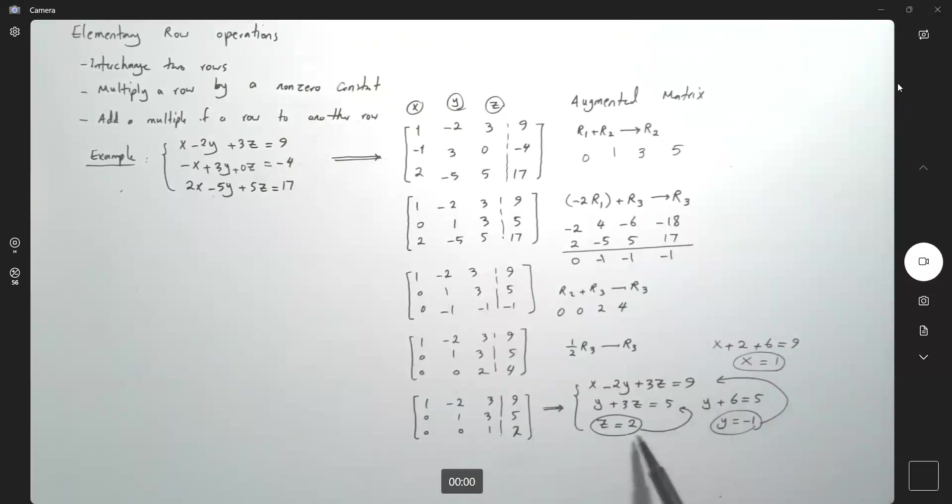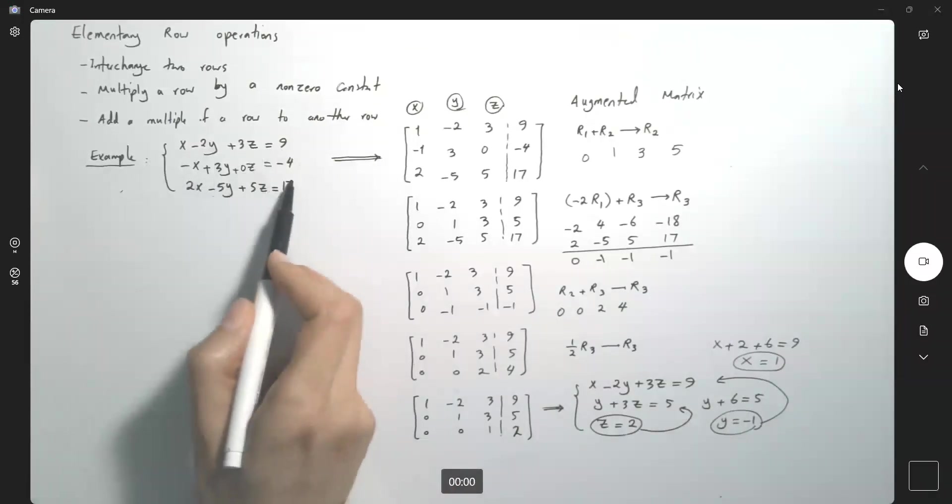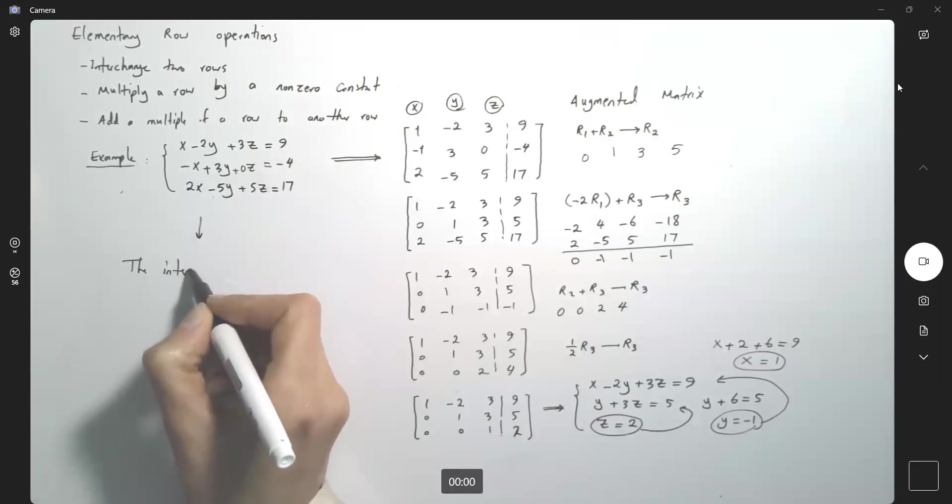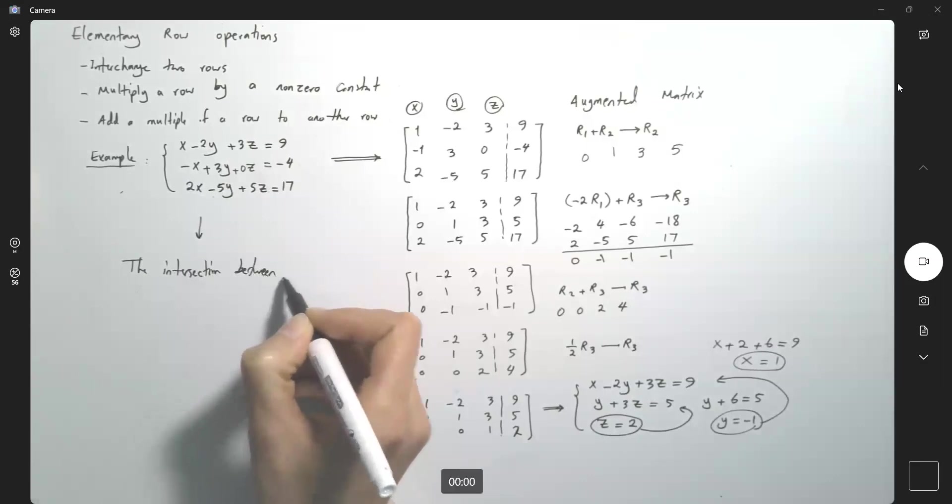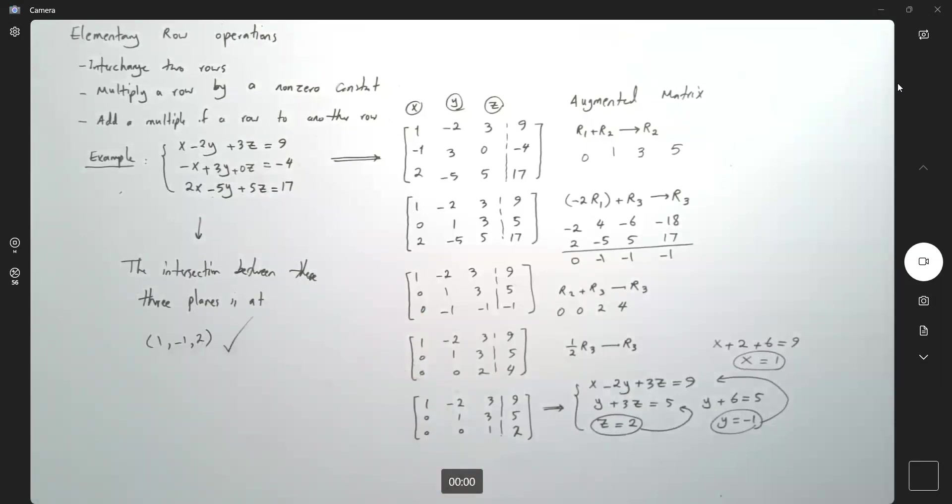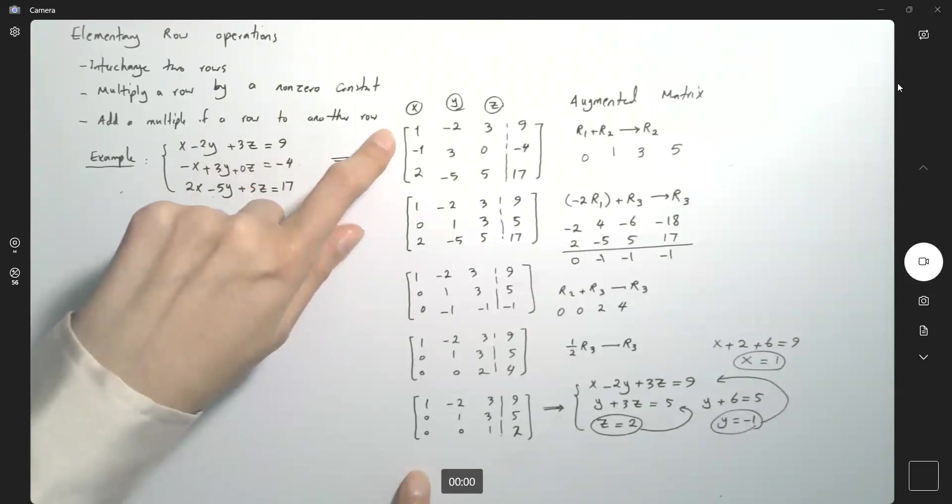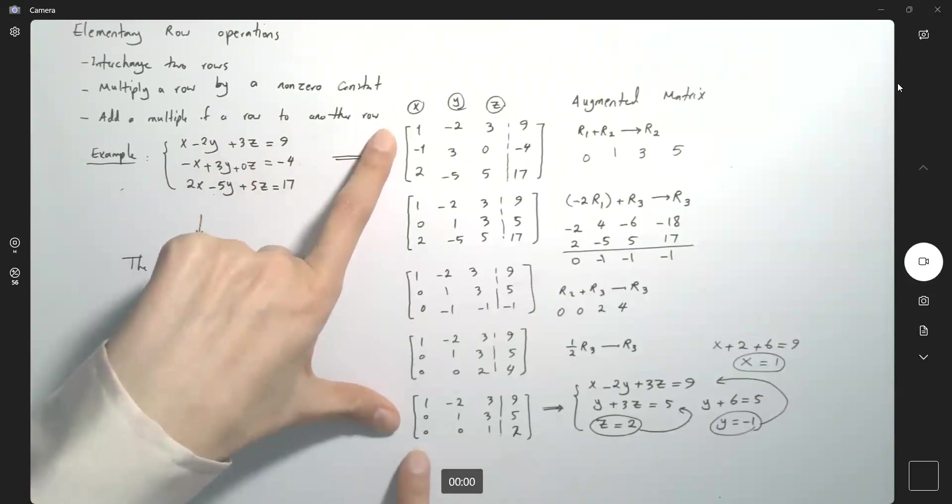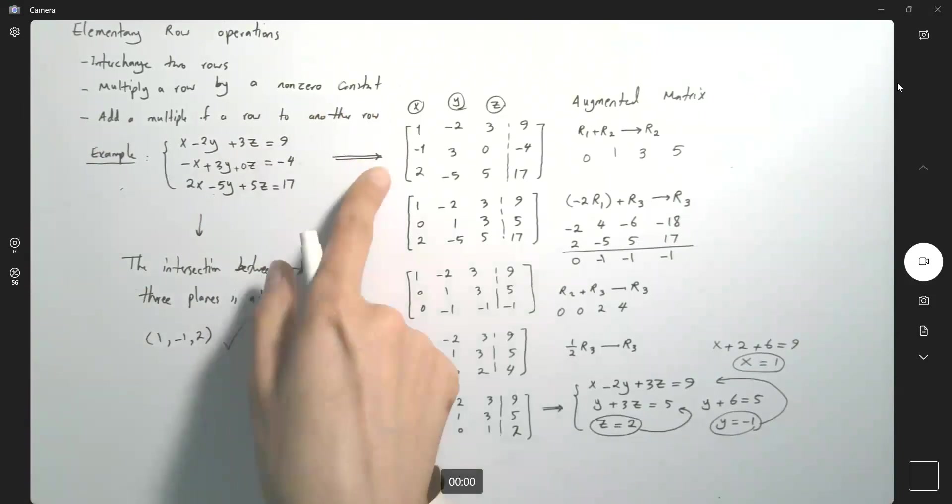And x becomes 1. So the solution of the system is 1, negative 1 and 2. The intersection between these three planes is at the point 1, negative 1 and 2. As you can see, we formed row echelon form. And then here we have a reduced row echelon form for the original matrix, which is now written using the row operations and converting everything into a simpler form.